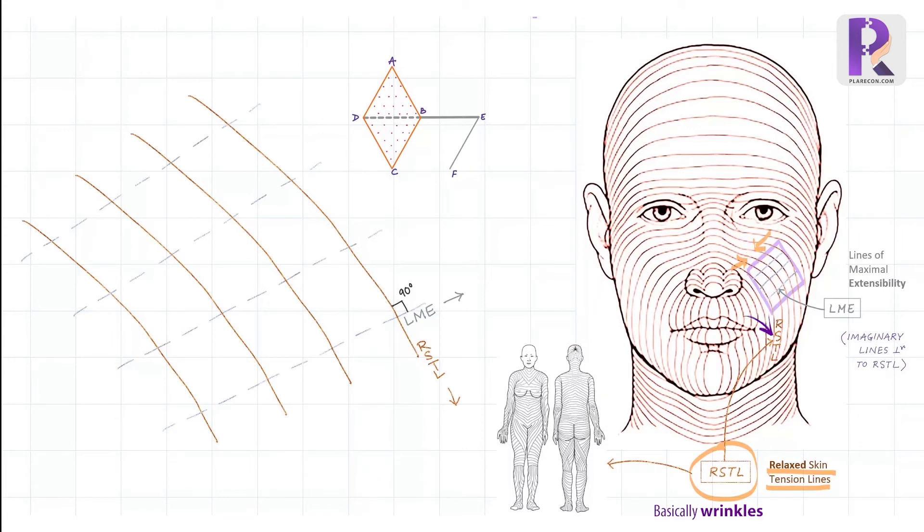The second set of lines, called LME or Lines of Maximal Extensibility, are imaginary lines drawn perpendicular to the RSTL. Hence, it is along the LMEs that the skin is maximally pinchable or lax. So, in the Limburg flap design, the points F and B, which on approximation cause the maximum suture line tension, should ideally lie along the lines of maximum extensibility or the LME.